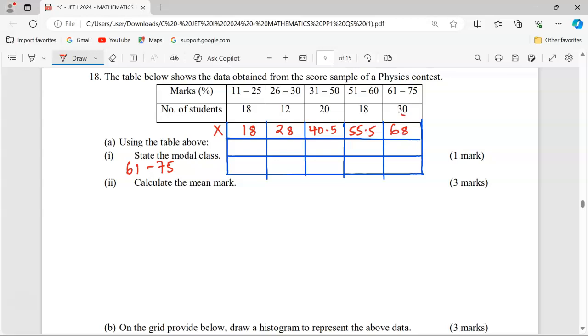18 by 18 gives us 324. 12 by 28 gives us 336. 20 by 40.5 gives us 810. 18 by 55.5 gives us 999, and finally 30 by 68.5 gives us 2040.